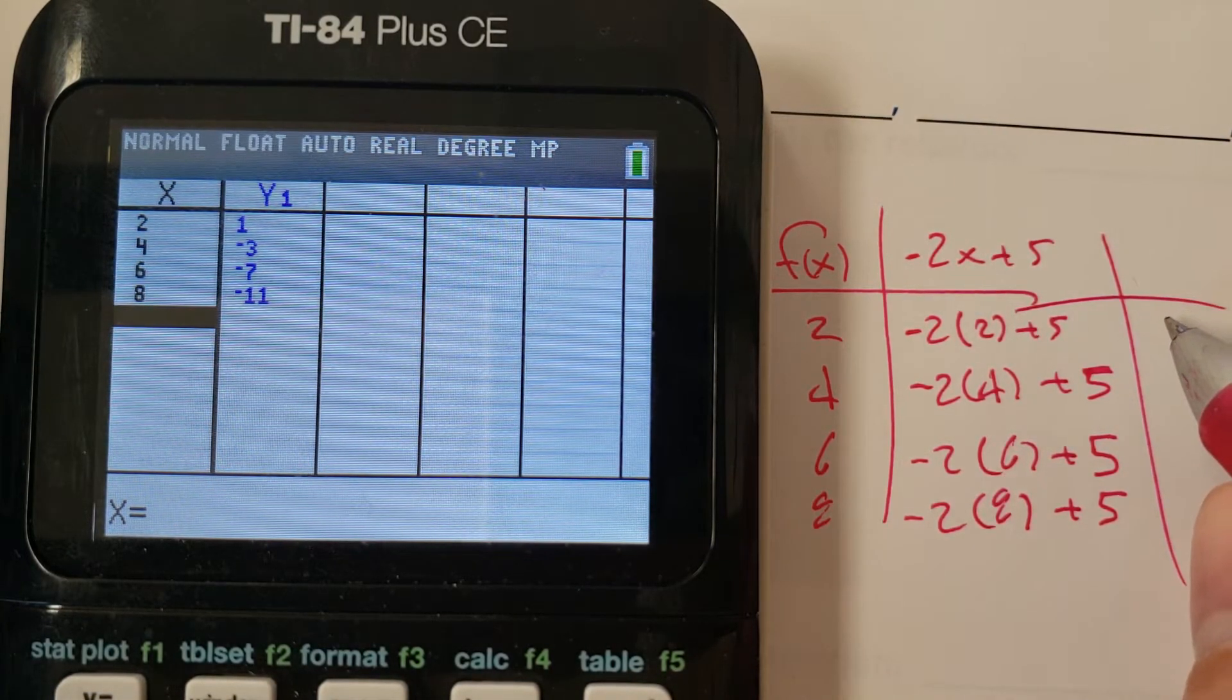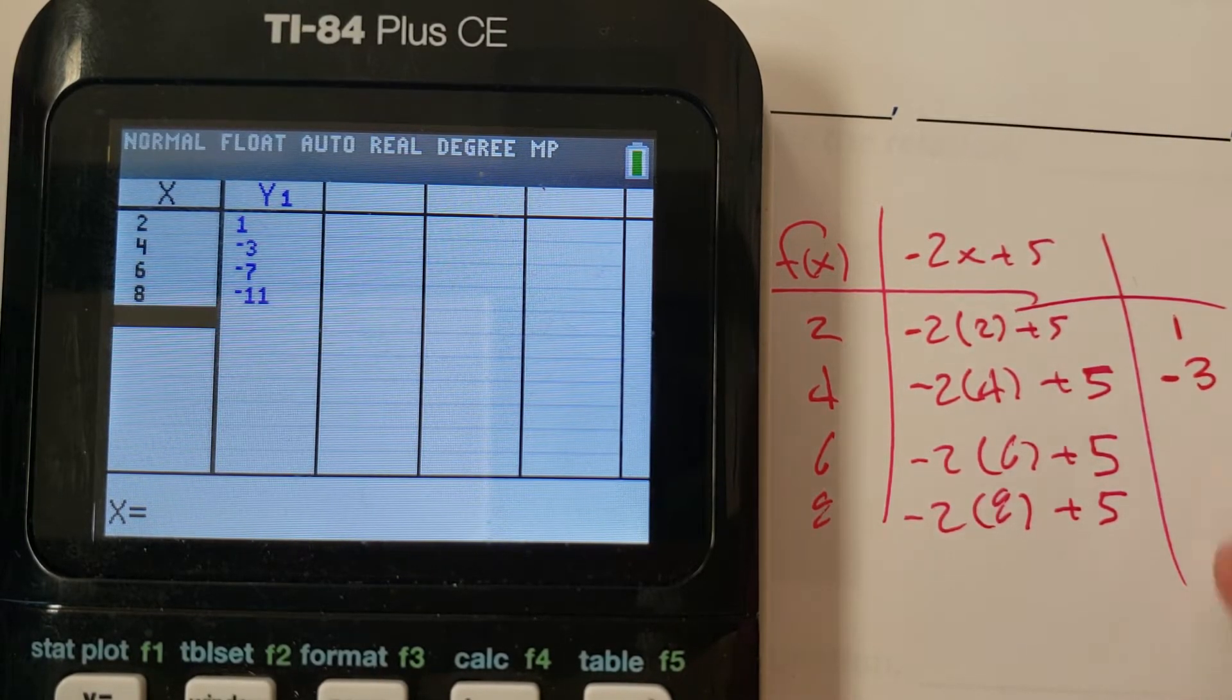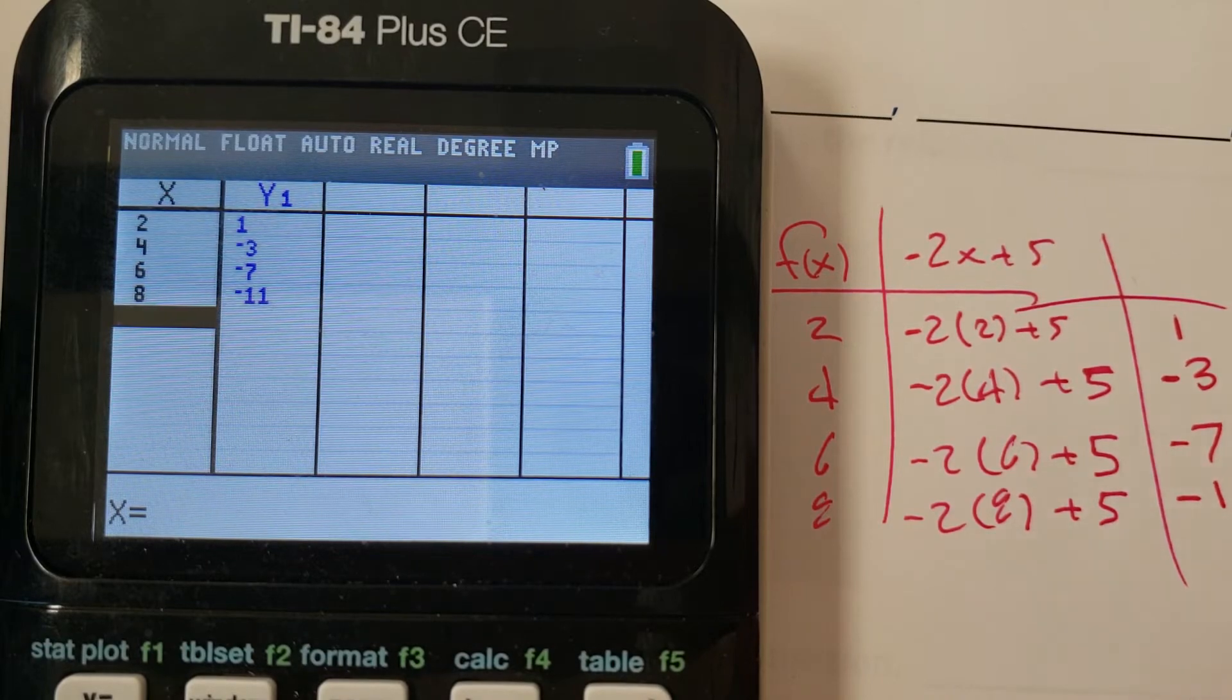So it looks like our values are going to be 1, negative 3, negative 7, and negative 11. Alright,